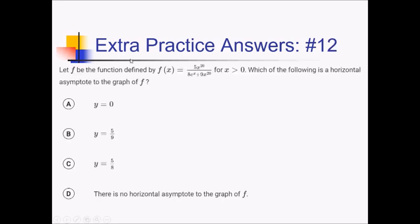On this problem, we're defining f as this rational exponential hybrid function where x is greater than 0. We want to know which of the following is a horizontal asymptote to the graph of f. So we're talking about an infinite limit.